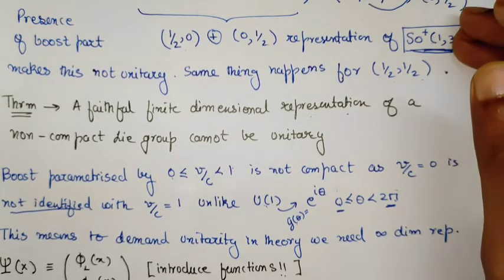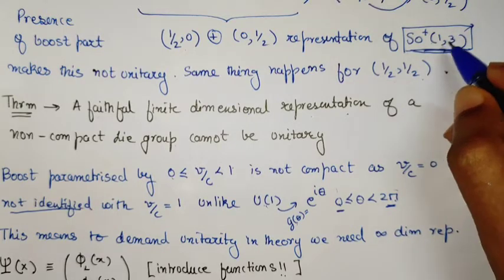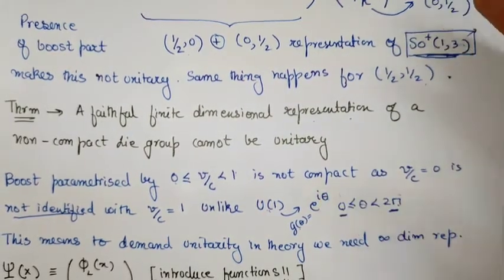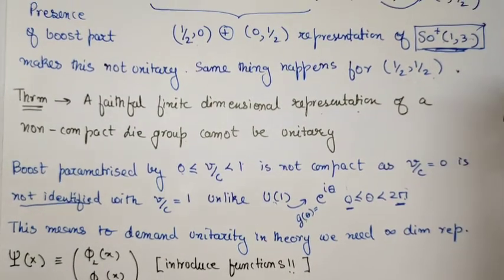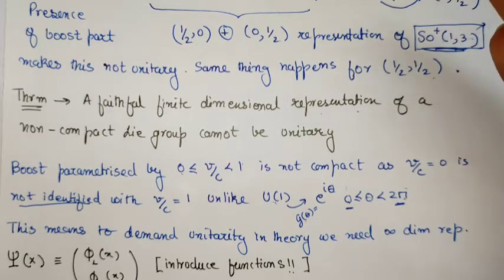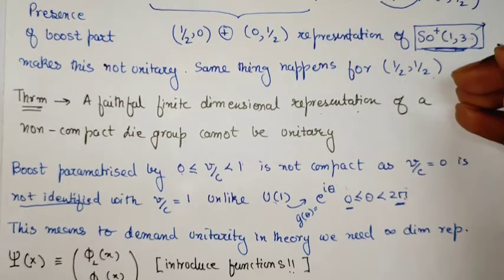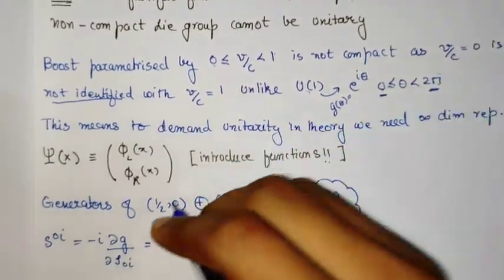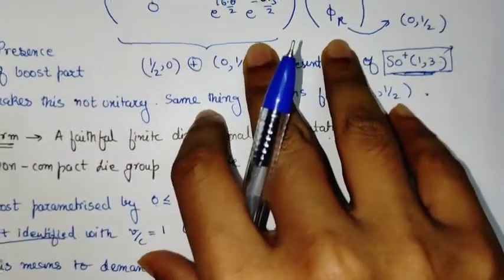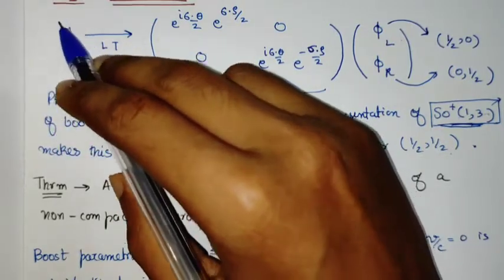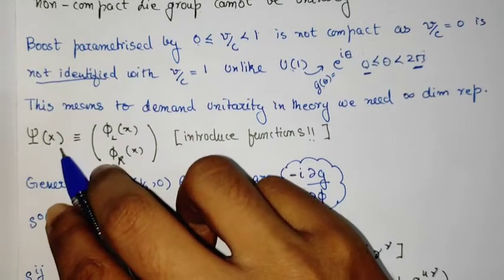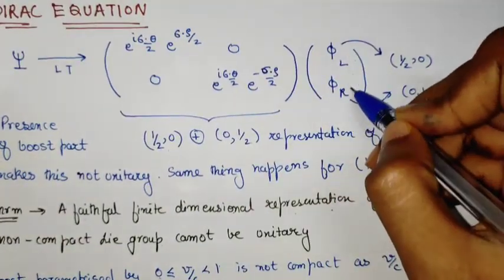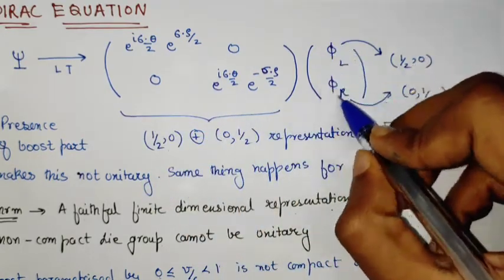To get a unitary representation of this group, we need to restrict ourselves to infinite-dimensional representations. We have already seen that fields carry infinite degrees of freedom, so an infinite-dimensional representation can be seen as a hint towards understanding that we must go towards a field-theoretic viewpoint. We make a small change: these vectors are now parameterized by X, the space-time coordinates. Everything will remain the same except that the vector space is now infinite-dimensional.